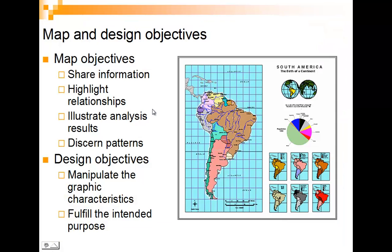Typically a map is going to include other things. When we make a map, we have to think about what is the goal. We want to share information, we want to highlight relationships — that's the whole goal of a map. We want to portray what we call regional differentiation, so we can see that the Research Triangle area between Greensboro, Charlotte, and Raleigh is going to be a lot higher than other areas. We want to highlight those, illustrate our results, and discern patterns.